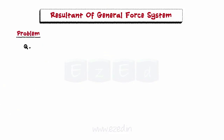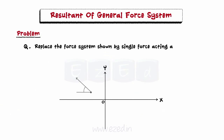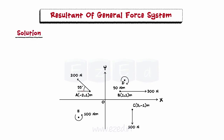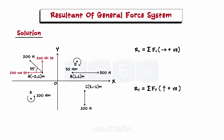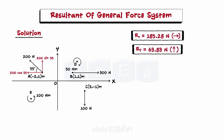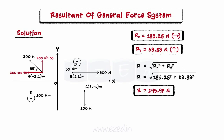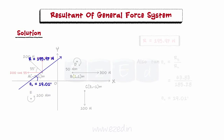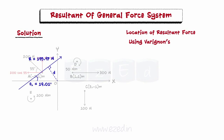Now let's consider this problem. Replace the force system shown by a single force acting at the origin and couple. We will first resolve the inclined force along the x-axis and y-axis as shown. After that, we find the summation of the forces along the horizontal and vertical axis respectively, that is, the horizontal and the vertical component of the resultant. Then we can find the magnitude of the resultant using this formula, and then easily find the inclination theta of the resultant with the horizontal axis. Now we have to find the exact location of the resultant from the point O. For that purpose, we will use Varagnon's theorem.